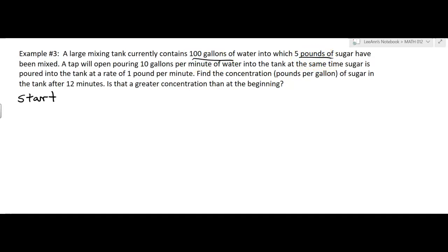A tap will open pouring 10 gallons per minute of water into the tank. At the same time, sugar is poured into the tank at a rate of one pound per minute. So one tap dispenses water at 10 gallons per minute and the other dispenses sugar at one pound per minute.